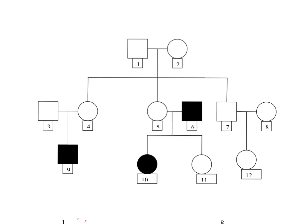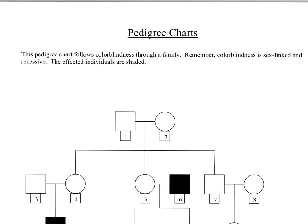Now the reason for the shaded in areas is because this is going to help us understand how we follow a trait through a family. And if we look at the top of this sheet, it's going to give us the information that we need to know. And it's telling us that we're going to be following colorblindness through a family. If you remember, colorblindness is sex linked. Colorblindness is also recessive.